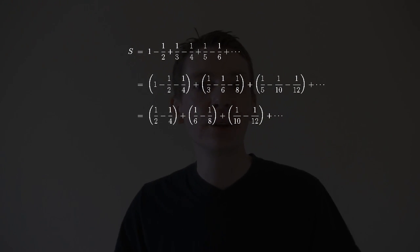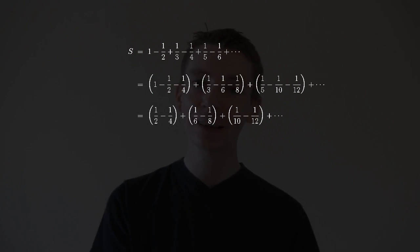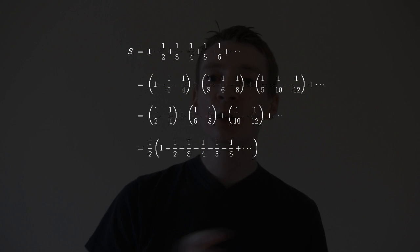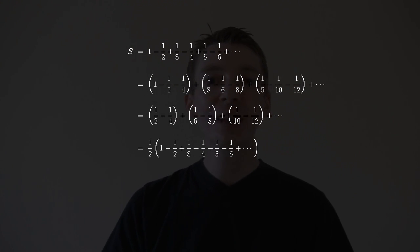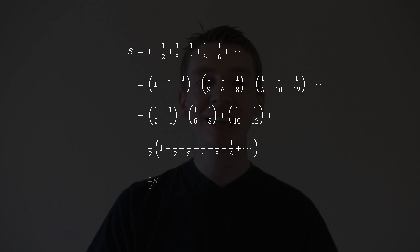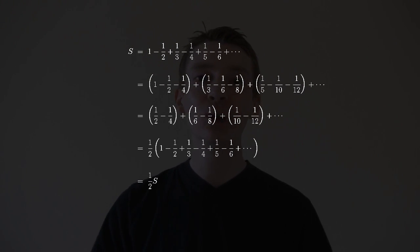Now, you might notice that all the fractions are even. So I'm going to take out a factor of a half — I'm allowed to do that. And what I get is another sum of alternating fractions again. That's my original series again — that's S. So what I've got is S is equal to a half S, which is fine if S is equal to zero. So S must be equal to zero. Solved.